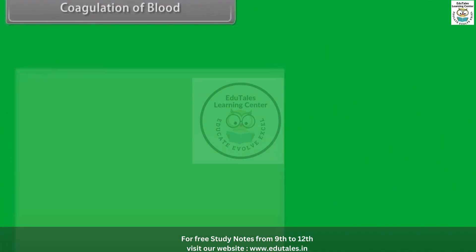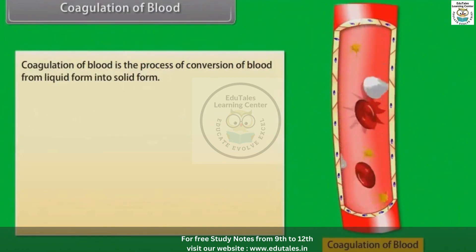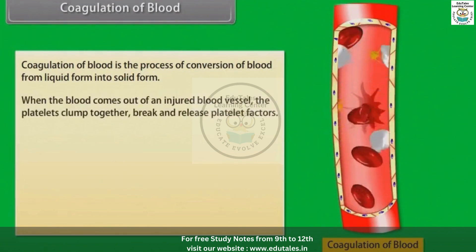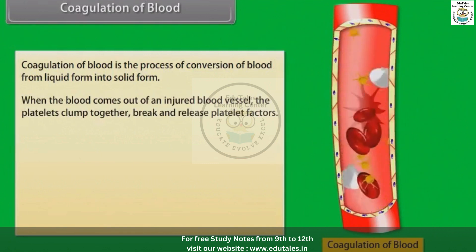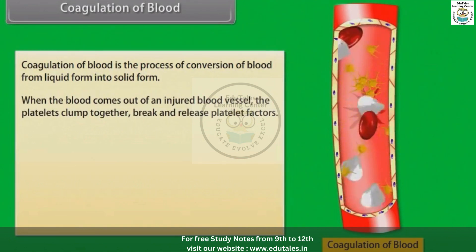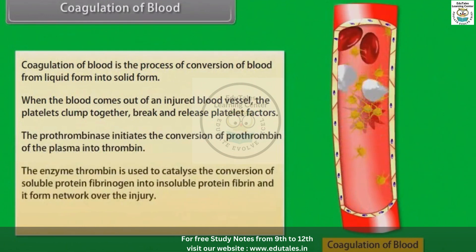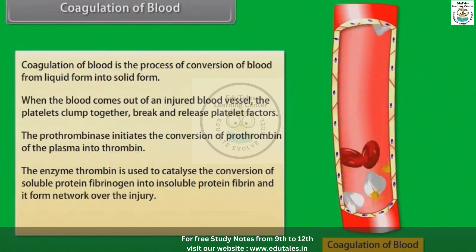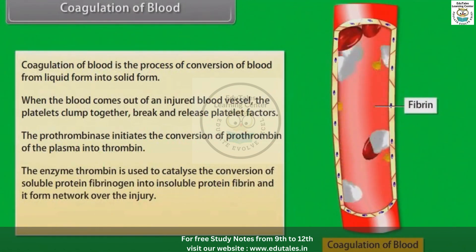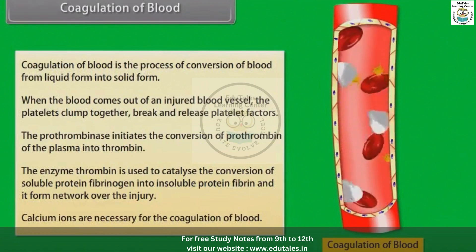Coagulation of blood is the process of conversion of blood from liquid form into solid form. When blood comes out of an injured blood vessel, the platelets clump together, break, and release platelet factors. Prothrombinase initiates the conversion of prothrombin in the plasma into thrombin. The enzyme thrombin then catalyzes the conversion of soluble protein fibrinogen into insoluble protein fibrin, forming a network over the injury. Calcium ions are necessary for the coagulation of blood.